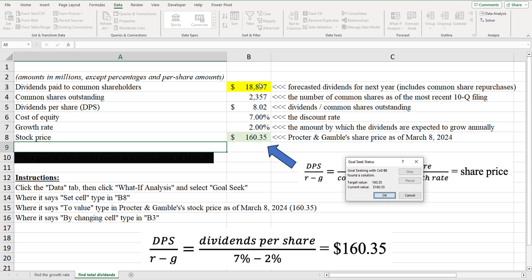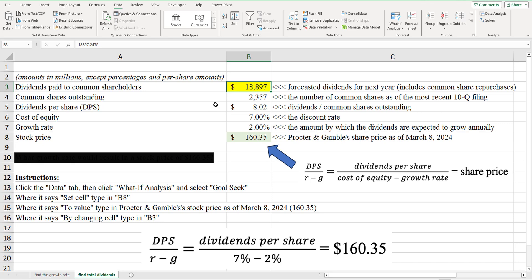And it results in, so we basically, now it's telling us, look, there must be total dividends and share repurchases of $18.897 billion, or $8.02 per share of dividends to result in this share price. In other words,